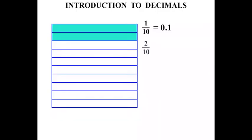Here we have two tenths. And as a decimal, that is written 0.2. Three tenths? What do you think? Did you say 0.3? It's not too hard.